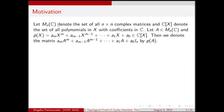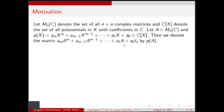We will denote the set of all n×n complex matrices by M_n(C), and the set of all polynomials in X with coefficients in C by C[X]. If we have a matrix A in M_n(C) and a polynomial P(X) = A_m X^m + ... + A_1 X + A_0 in C[X], then we define a matrix P(A), which is again a member of M_n(C).